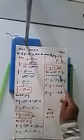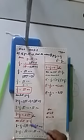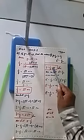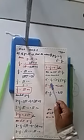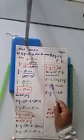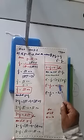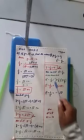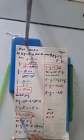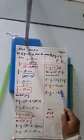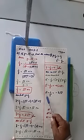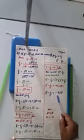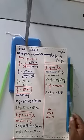Now we find y square minus 1 upon y square. We use the identity: y square minus 1 upon y square equals y minus 1 upon y, multiplied by y plus 1 upon y. Substituting the values, y minus 1 upon y is minus 4 and y plus 1 upon y is 2 under root 5. Multiplying gives y square minus 1 upon y square equal to minus 8 under root 5. This is your answer.